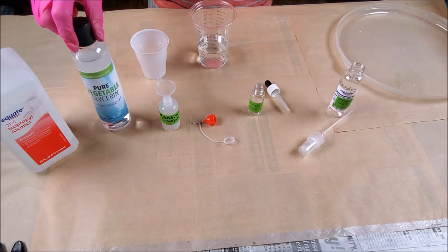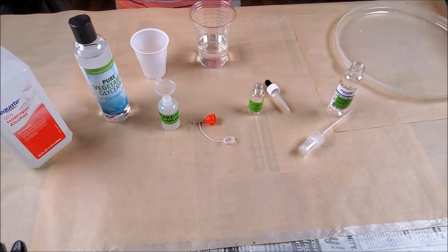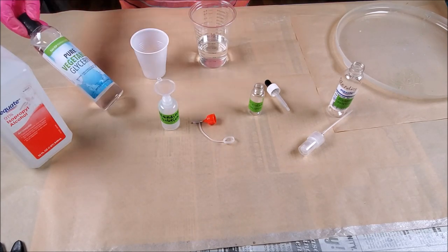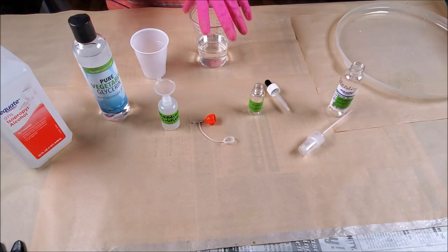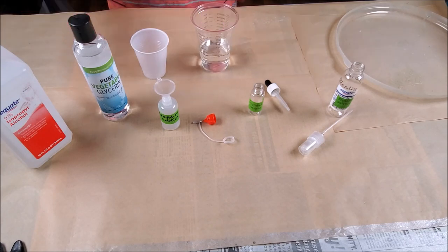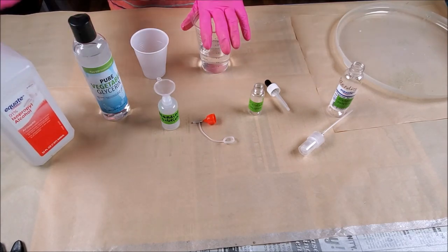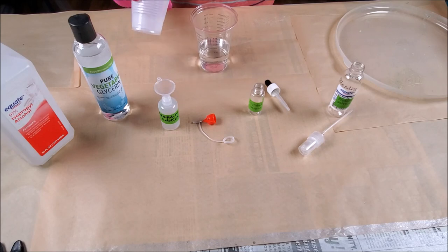I'm making three ounces, and for every ounce you want three drops of your vegetable glycerin. Okay, so I put three ounces of the isopropyl alcohol in a cup and I put some of the glycerin in here so I can measure it out by the drops instead of pouring it out of the bottle.